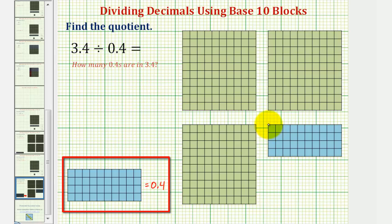Well, here's one copy of four longs or 0.4. Here's a second copy of four longs or 0.4. Here's another copy of four longs or 0.4.